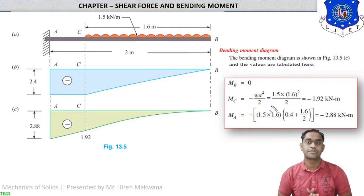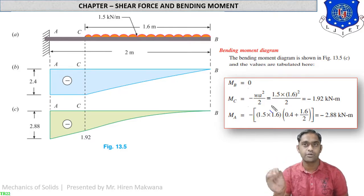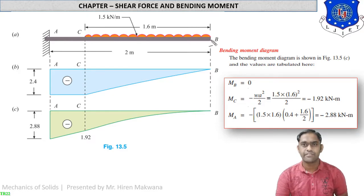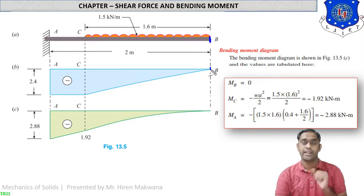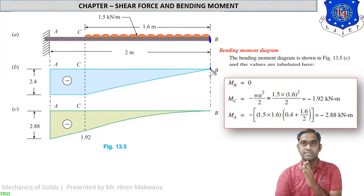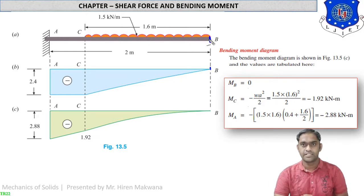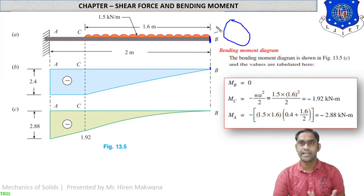What is the method for finding bending moment? Look at the right side of the particular point. At point B, the free end, there is nothing on the right side — no load. So bending moment at point B is zero.